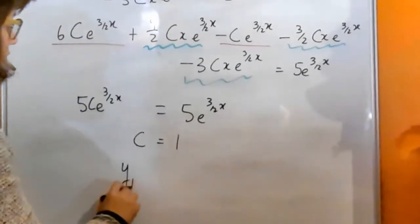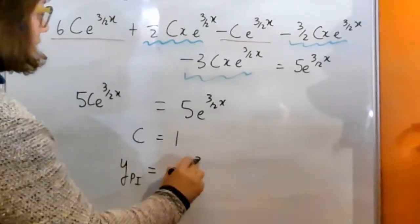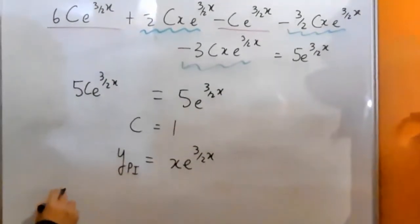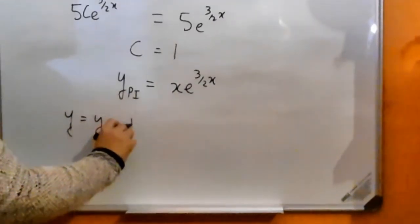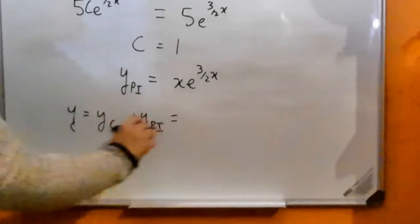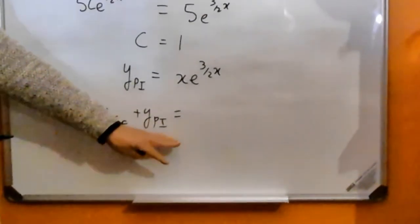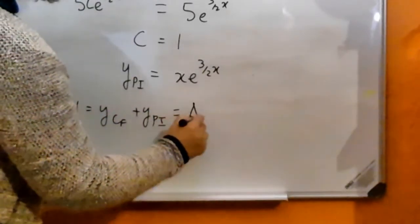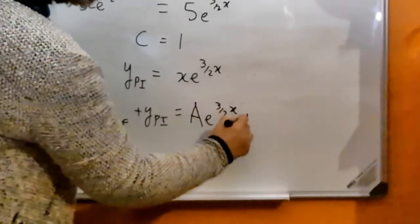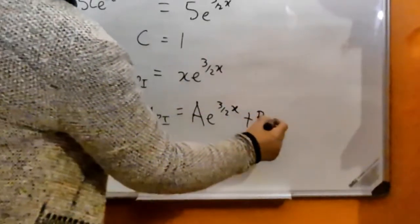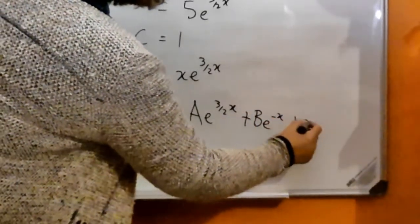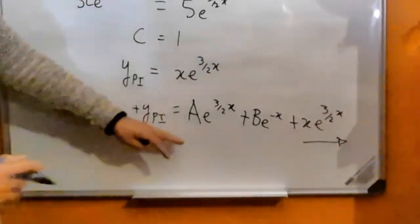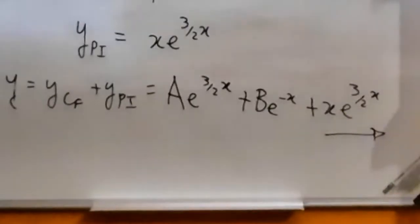That means our particular integral is just going to be x e to the 3 over 2x. And our final answer, which is made up again of the complementary function as well as the particular integral, is going to be y equals A e to the 3 over 2x plus B e to the minus x plus x e to the 3 over 2x, and that is the general solution for the original differential equation.